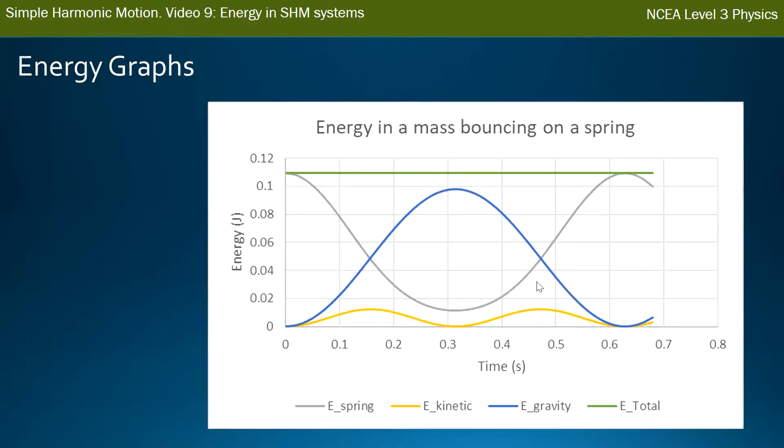But again, the important thing to see is that the total energy, which is in green, is constant. It's the same amount the whole time, and this is because this is a closed system. Energy moves in different forms within the system, but it doesn't leave. The system of the mass bouncing up and down on the spring is closed. No energy can get into it, and no energy can get out of it.